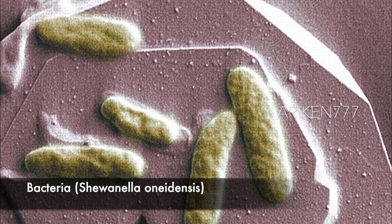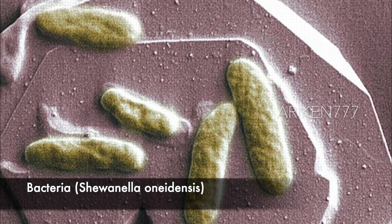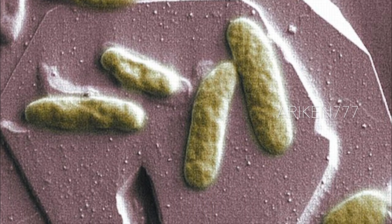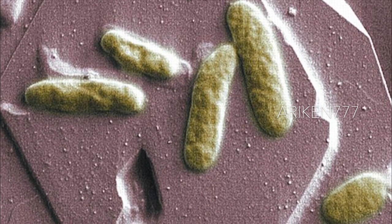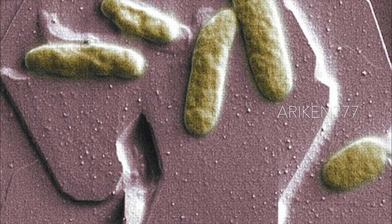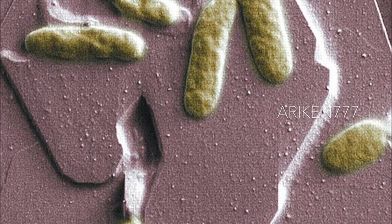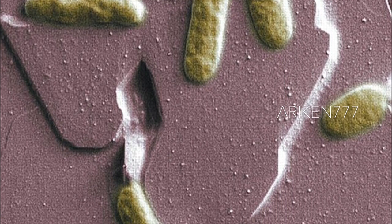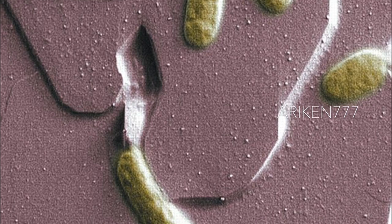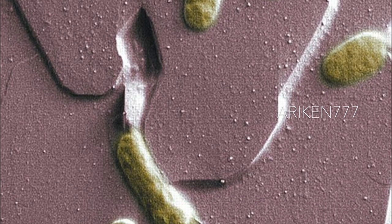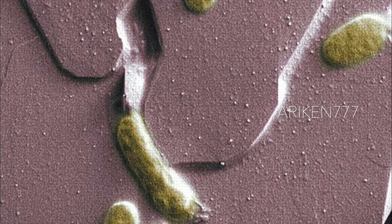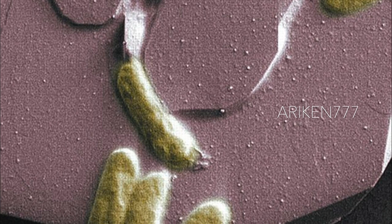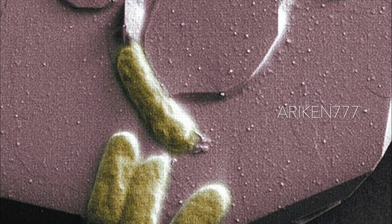These rod-shaped structures are metal-reducing bacteria. These extremophile bacteria are able to convert toxic metals and compounds such as uranium, chromium, and technetium into water-insoluble forms. This ability could one day be used to clean contaminated groundwater.